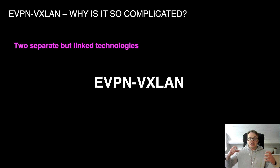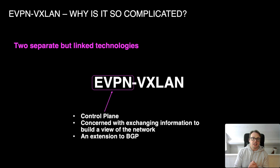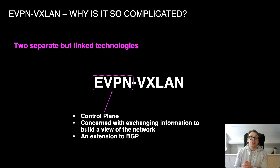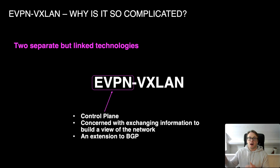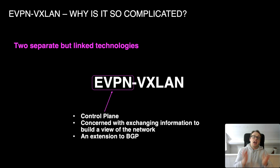EVPN is working at the control plane — the part of the networking device concerned with exchanging information to build a view of the network. We're talking routing protocols advertising their local subnets to remote peers to gain a view of the network and find the best path. EVPN is an extension of BGP; BGP and OSPF are the things operated in the control plane, and that's where EVPN sits.